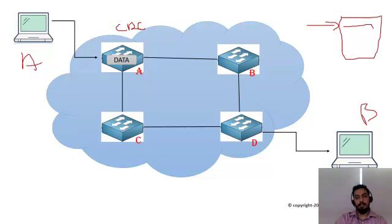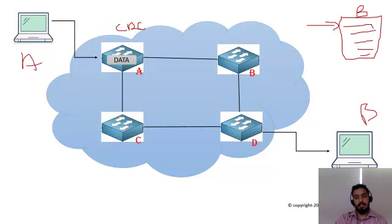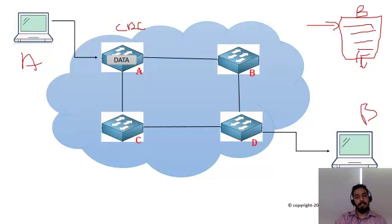Every device has a certain buffer where it keeps received data for further processing. For example, Device B may have a buffer capacity of 10 files. Data is processed one by one — the file received earliest is processed first, then file two, then file three, and so on.